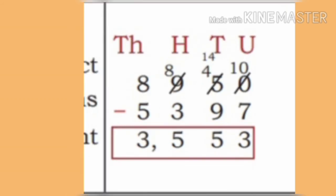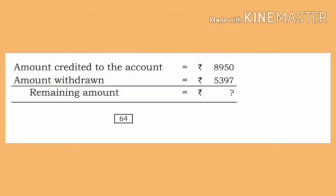Now next, in the minuend at the thousands place, subtract 5 from 8 thousands. Then 3,000 remains. It is not possible to subtract 5 from 8 thousands. 5,000 remains. Therefore, the remaining amount in the account is rupees 3,553.